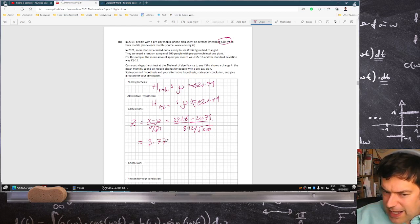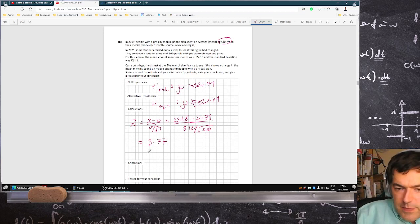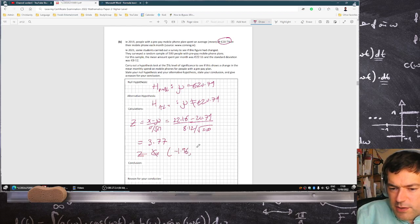They never asked for the p-value, so I don't have to calculate the p-value here. I can take a bit of a shortcut. This value of z is not within the usual minus 1.96 to 1.96 range.